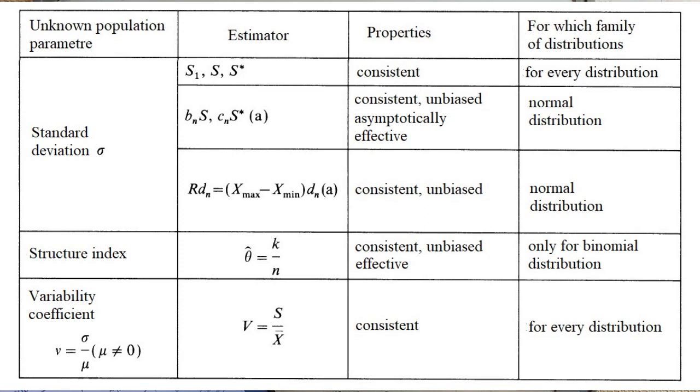Okay, now the structure index. The structure index is just k over n. For example, if we have the people who like Coca-Cola and we test, say, 10 people and four out of them choose Coca-Cola, then the structure index is 4 divided by 10. Well, this is effective and unbiased and only for the Bernoulli trial. We will show that in a moment. We will show its unbiased estimator in a moment.